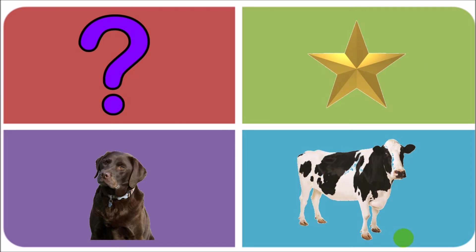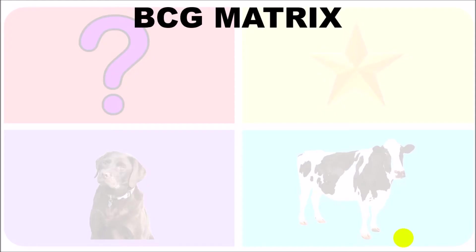Today we are going to be looking at the BCG matrix — the Boston Consulting Group matrix. It is basically a tool to analyze the different product lines that you may have running simultaneously in your company.